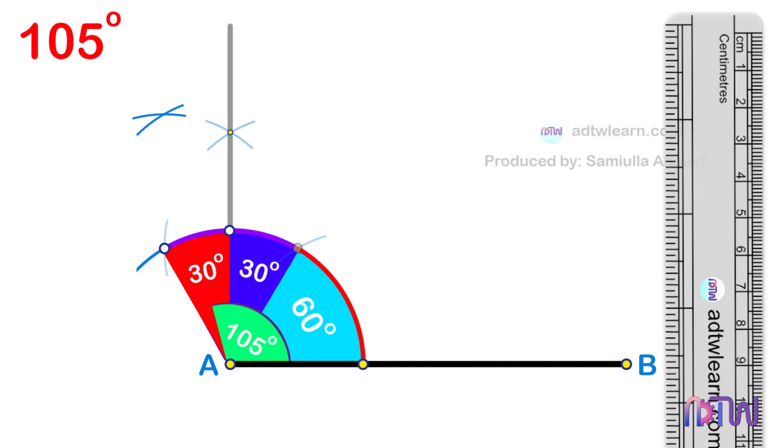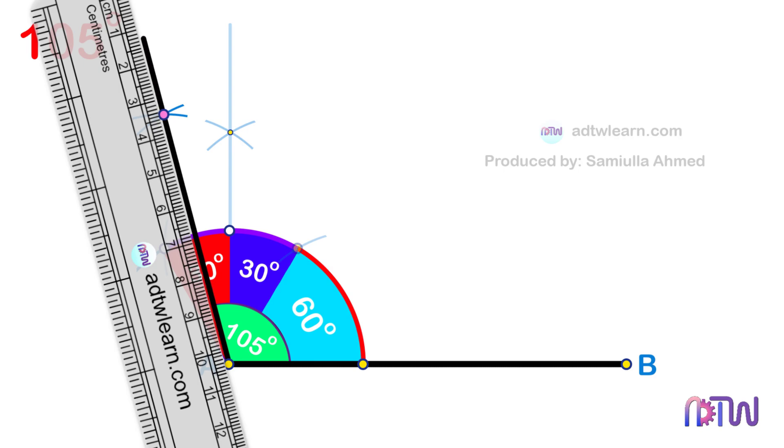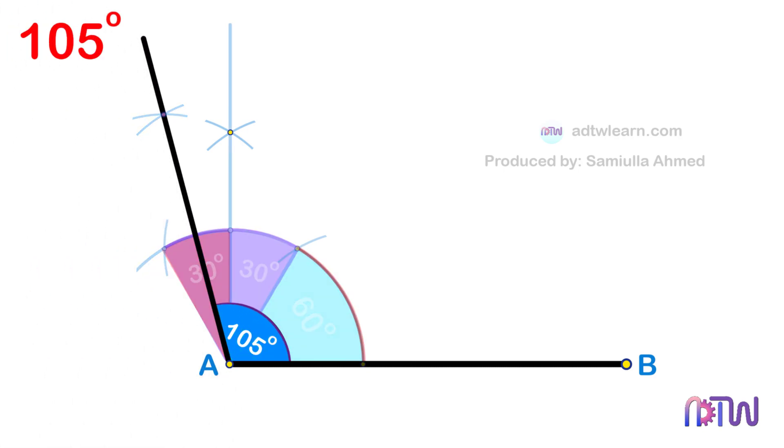After this, draw a line passing through this point. The angle made by this line will be 105 degrees. This is the required 105-degree angle.